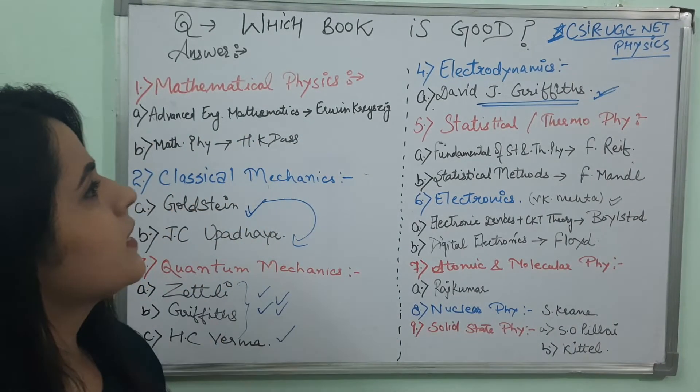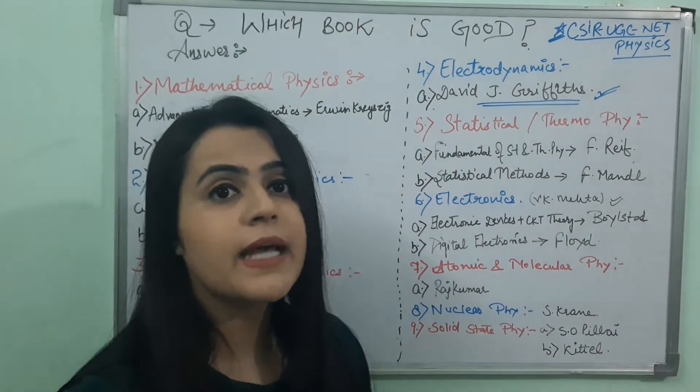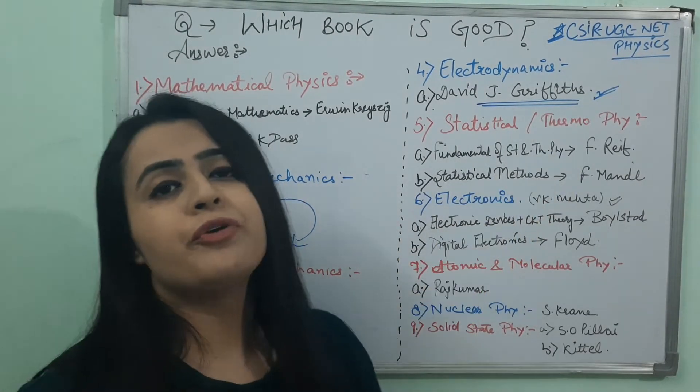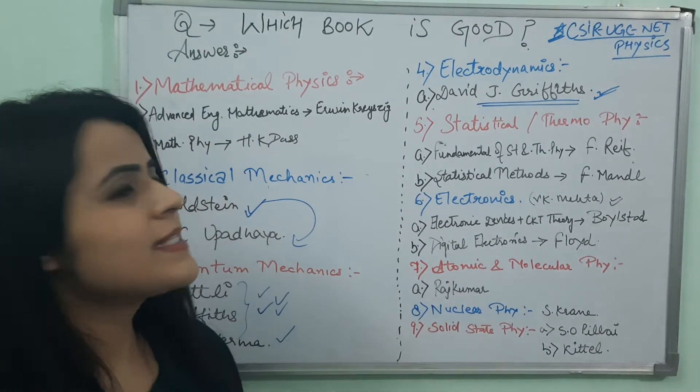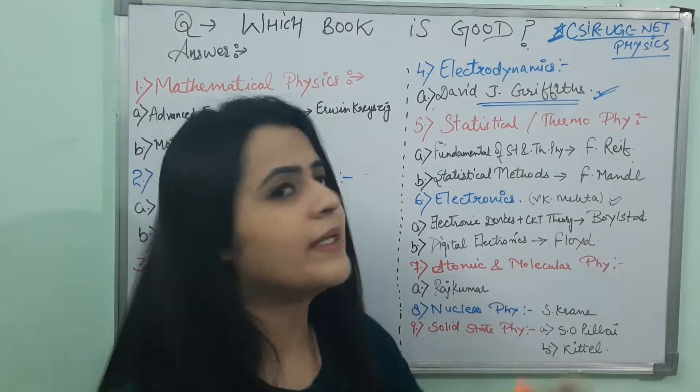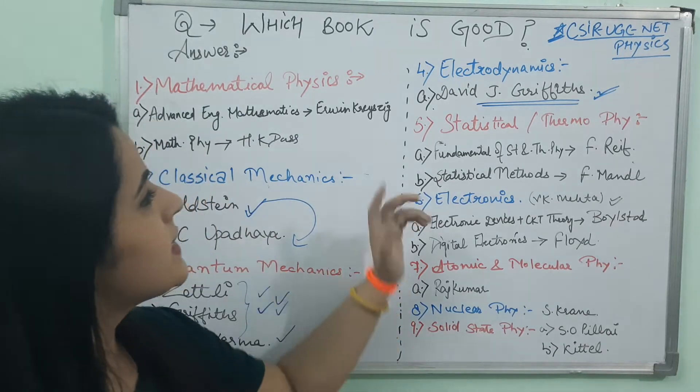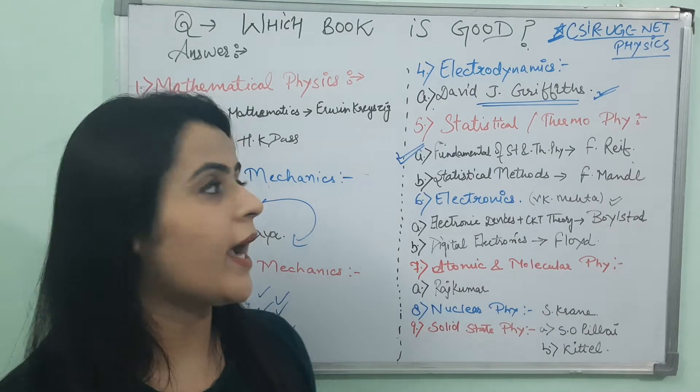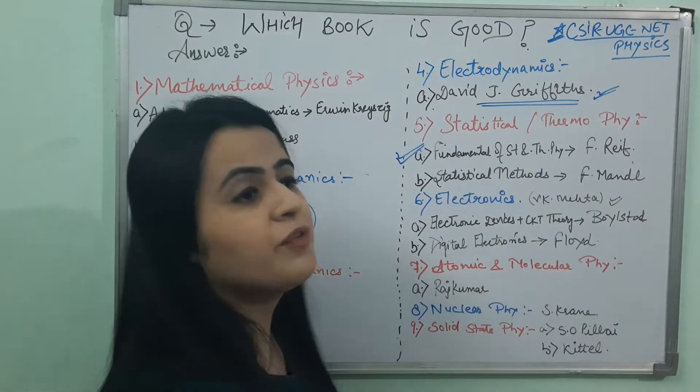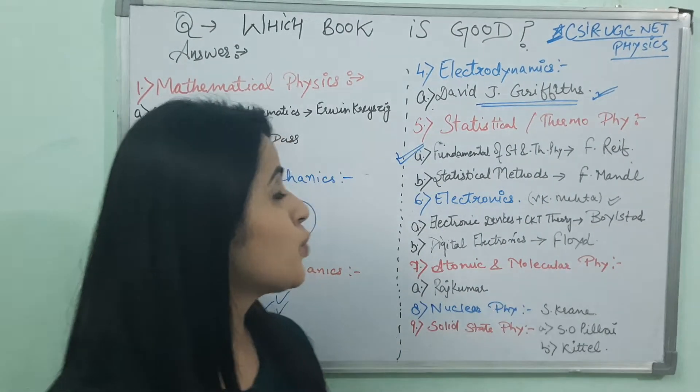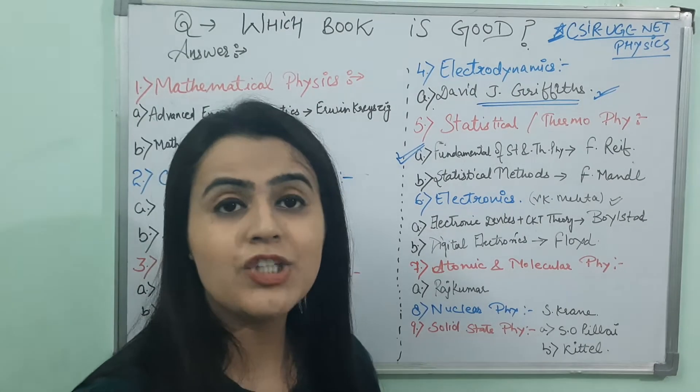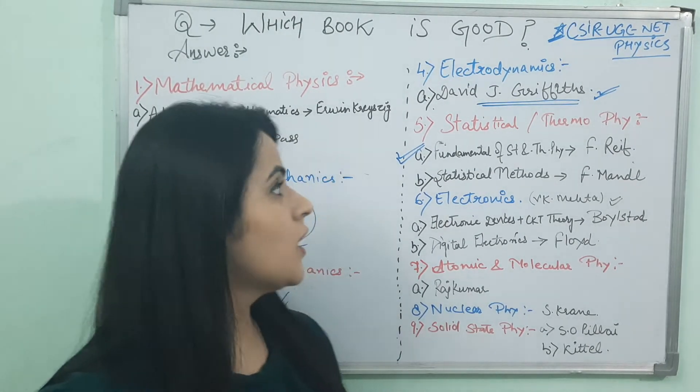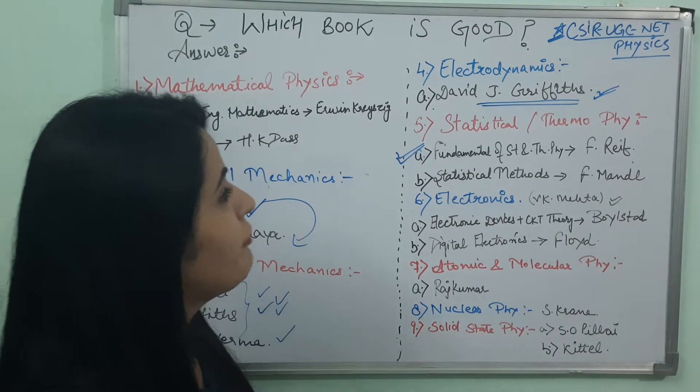Then the book is Statistical and Thermodynamics Physics. For Statistical and Thermodynamics, for both these papers, I refer you Reif. And then for only Statistical Method, I refer you F. Mandl. This is a very good book for example of Statistical as well as Thermodynamics. In this Thermodynamics, it will cover Carnot heat engine, it will cover Maxwell Equation, it will cover heat engine and each and every topic. And in Stat, it will come Fermi Equations, Bose-Fermi distribution, every each and everything.